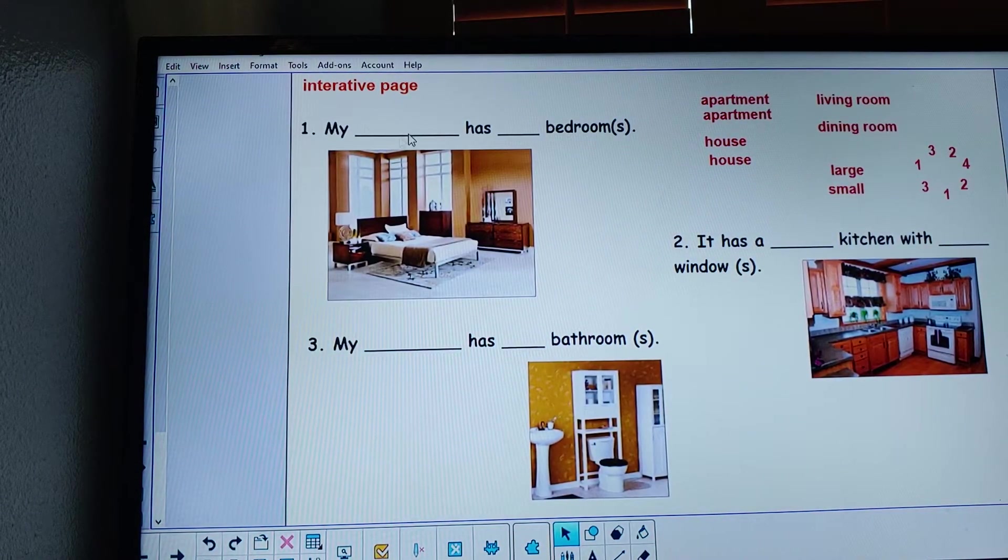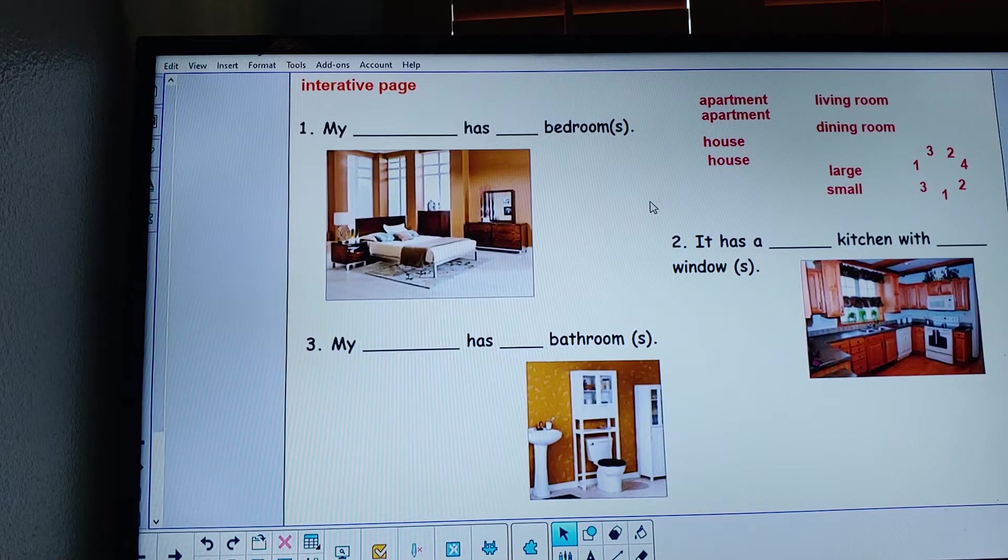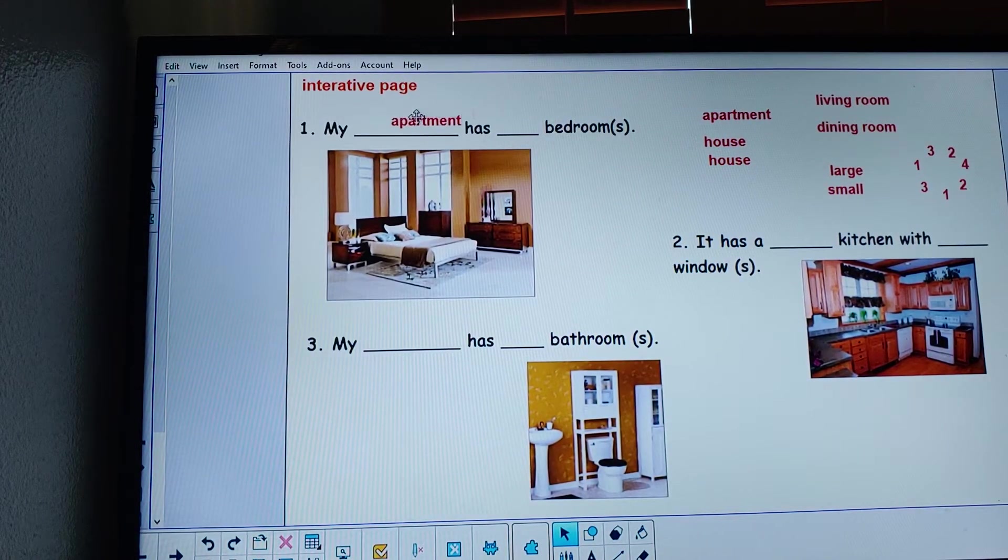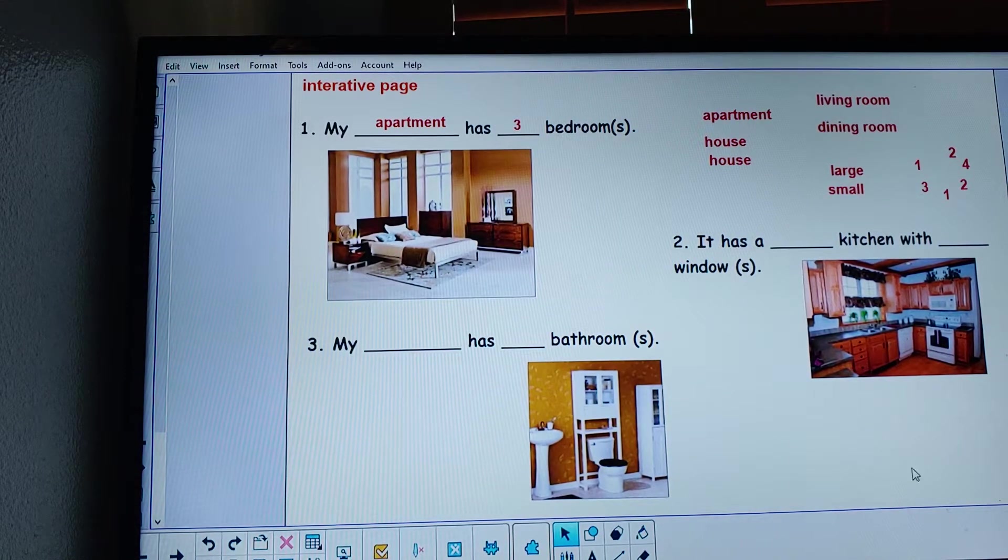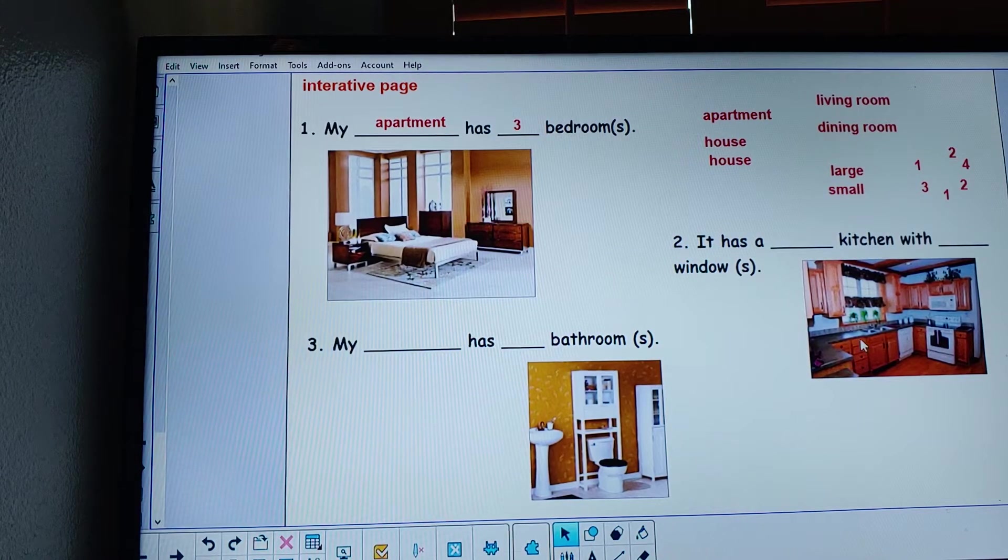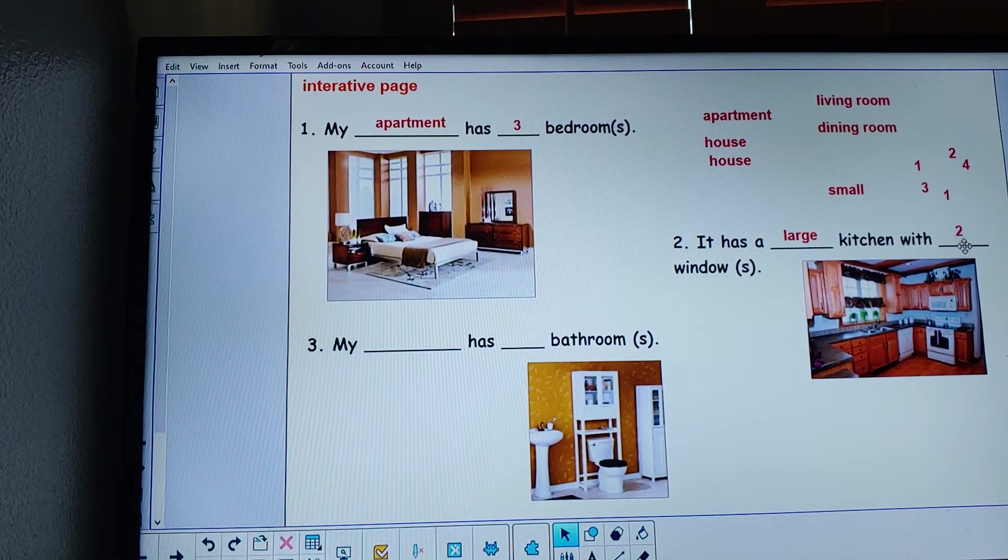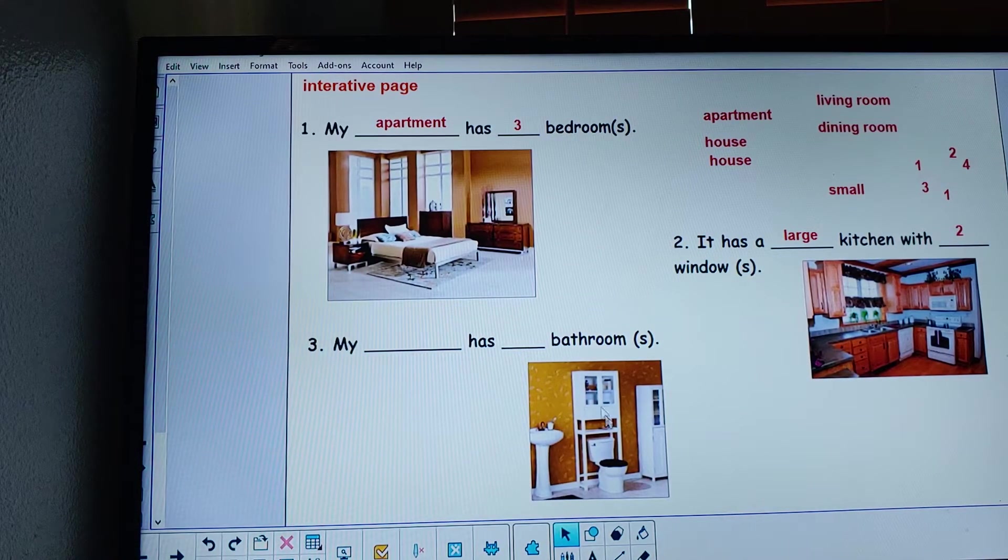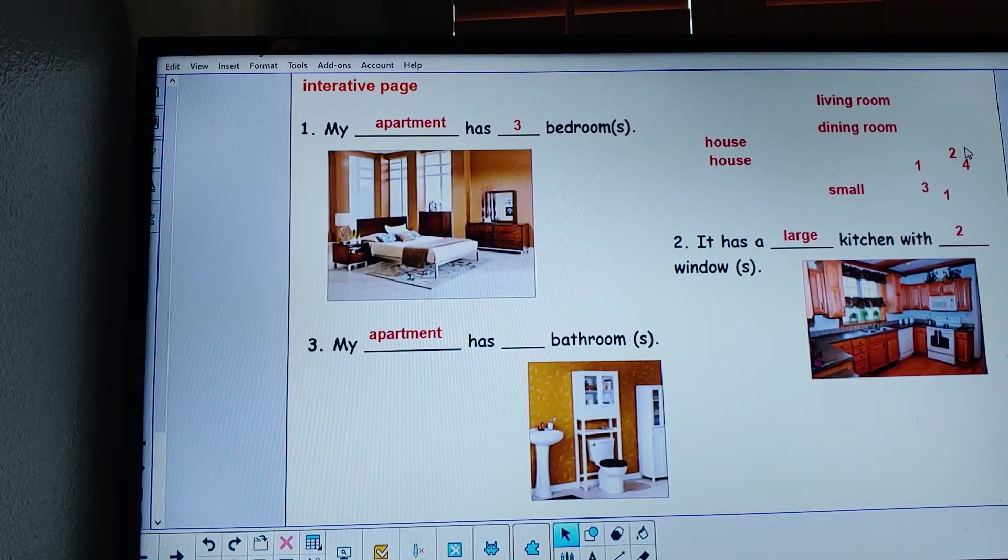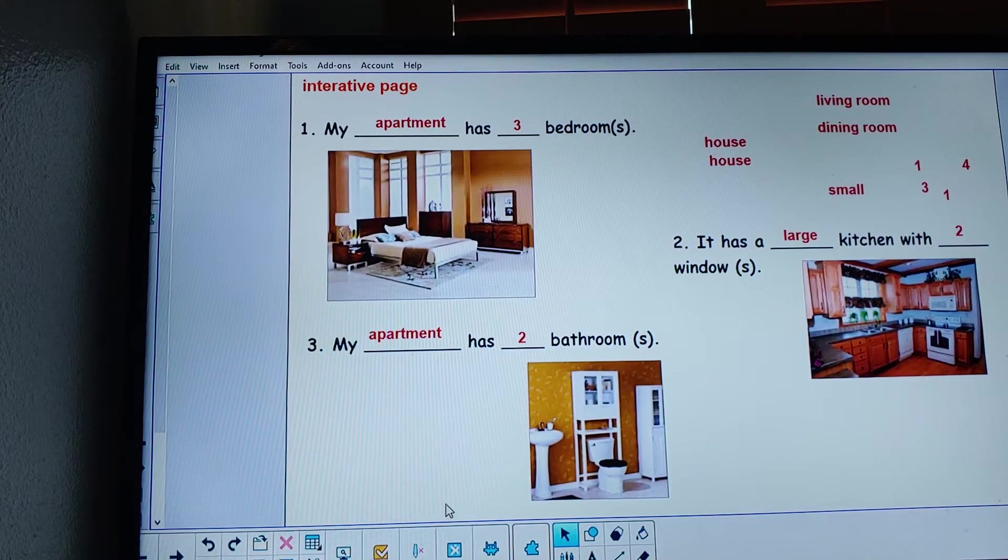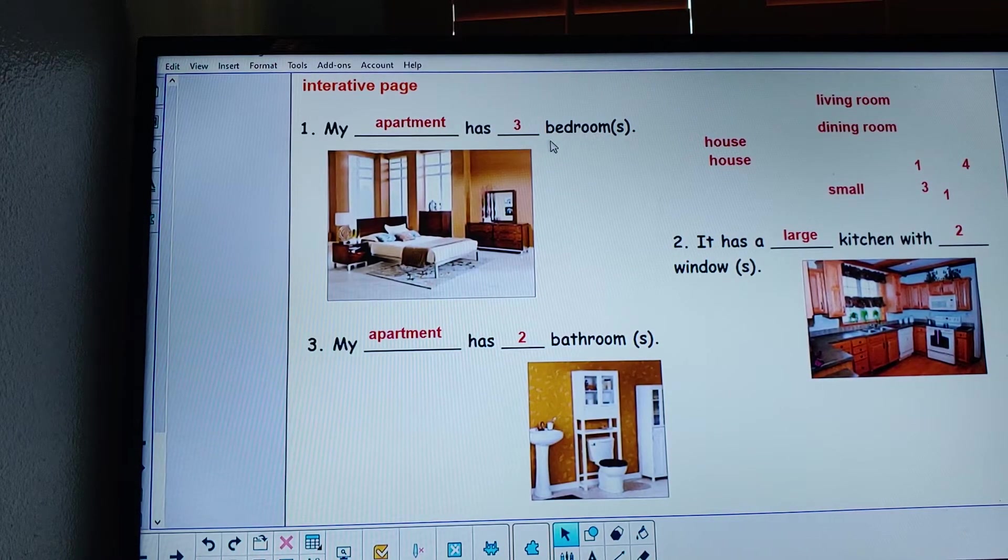Let's fill in the blank spaces here with our information. The first one, we're going to choose between apartment and house. So let's use apartment. My apartment has three bedrooms. Okay, let's try number one again. My apartment has three bedrooms.